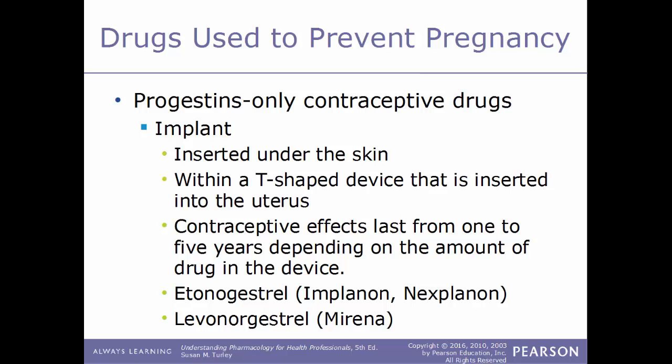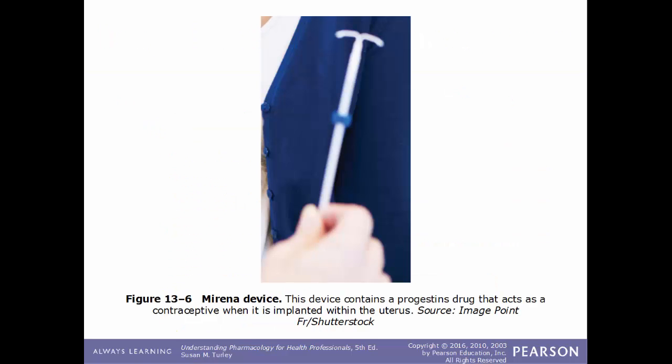Other progestin-only contraceptive drugs can be inserted underneath the skin or into the uterus in a T-shaped device. The contraceptive effects of these devices can last from one to five years depending on the amount of drug in the device. Examples include etonogestrel, known by the trade names Implanon and Nexplanon, and levonorgestrel, known by the trade name Mirena — a T-shaped IUD (intrauterine device) implanted within the uterus.